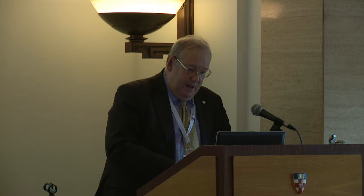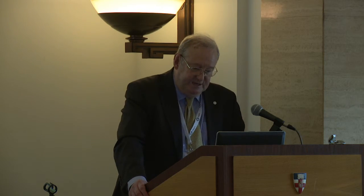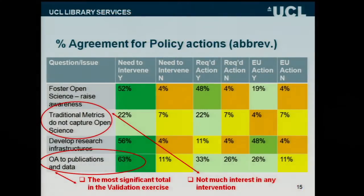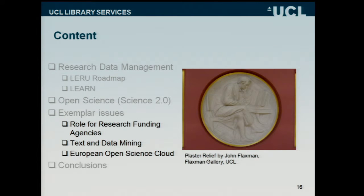Moving to that situation may mean looking at the metrics issue first — capturing what the metrics should be, so we can advocate to directors of HR that this is a reasonable thing to do. The area where people most wanted policy intervention was open access to publications and data: 63% said yes, there does need to be some policy intervention, and about 26% thought it should be the EU doing the intervention, which is quite a high percentage for the EU columns. That's the background to LEARN, where it fits in the landscape and what we hope to achieve, with your input absolutely essential to enable us to deliver on the project objectives.